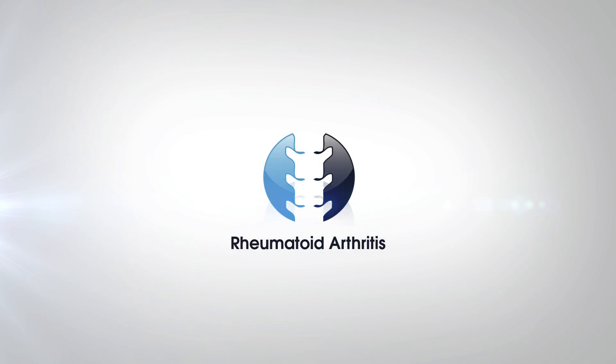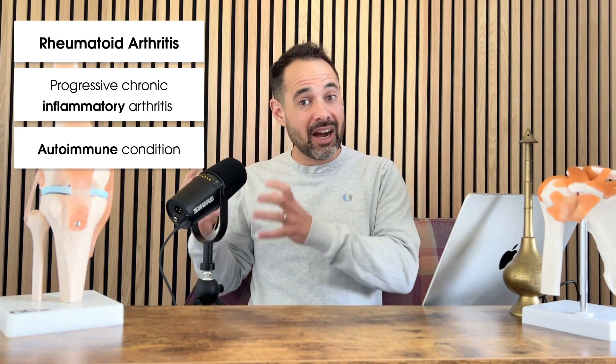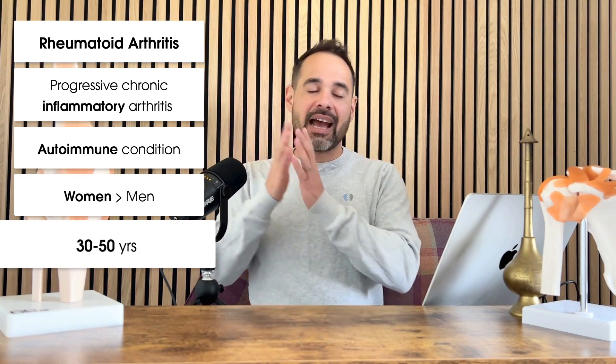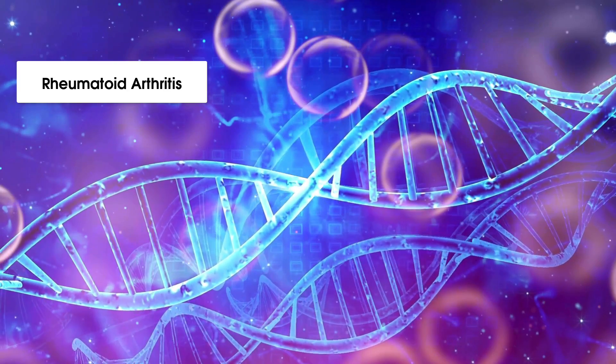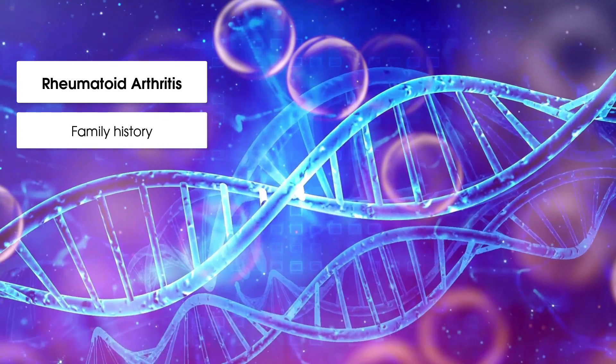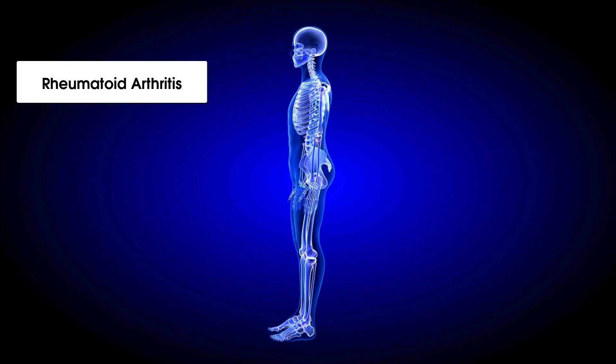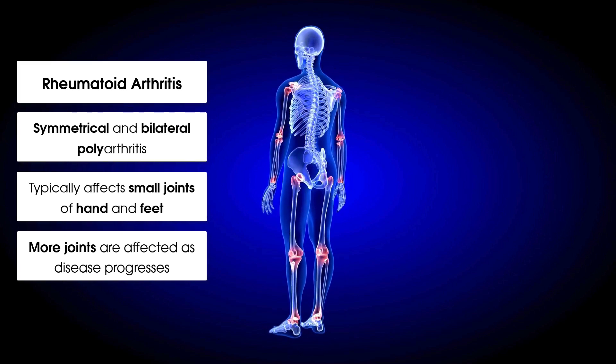Moving on to rheumatoid arthritis. With osteoarthritis, symptoms present because of a mechanical cause. Rheumatoid arthritis, by contrast, is a progressive and persistent inflammatory arthritis — an autoimmune condition. Therefore, it can present more commonly in the younger age group, particularly in women between the ages of 30 and 50. Rheumatoid arthritis also commonly has a hereditary link, so having parents or grandparents with the condition increases the chances of developing it. A key distinguishing feature is that it commonly presents with widespread, multiple joint pains.